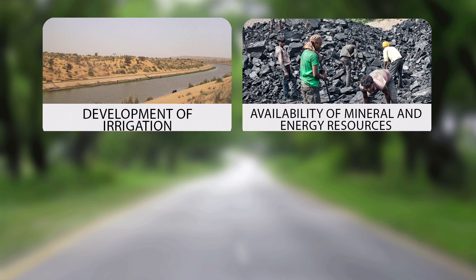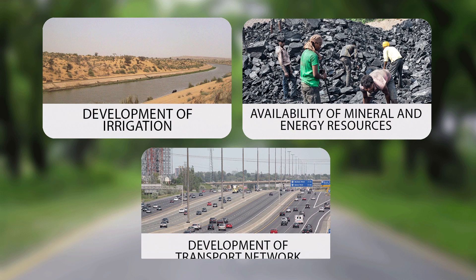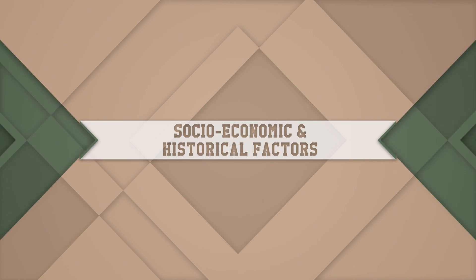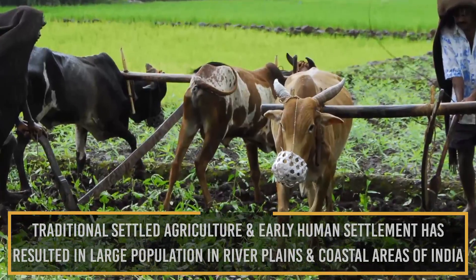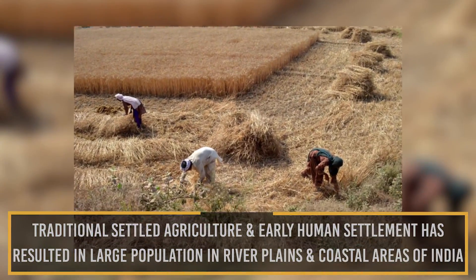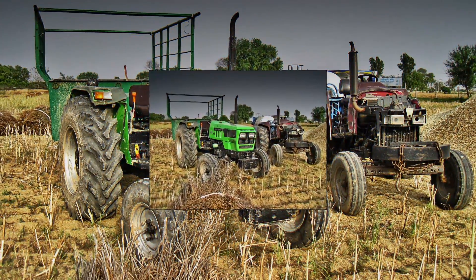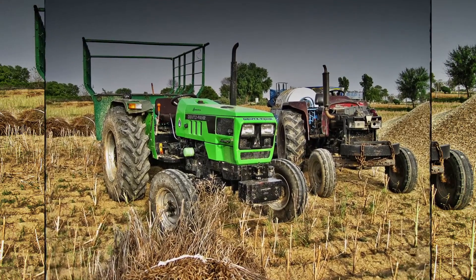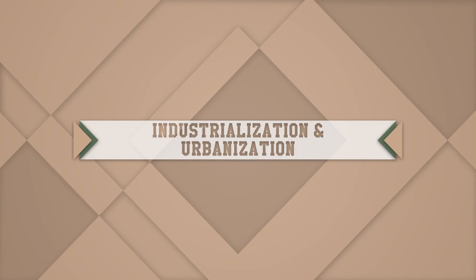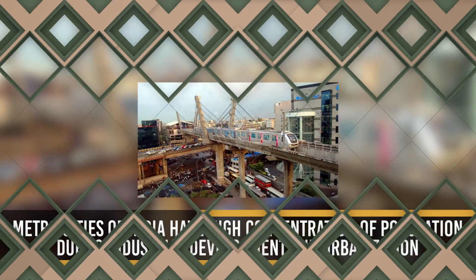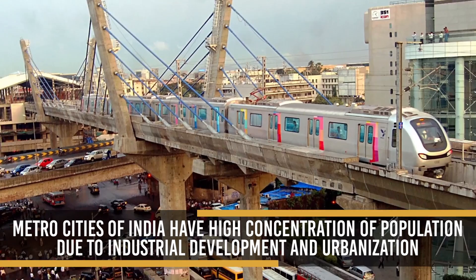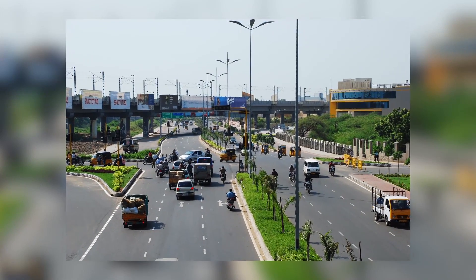Development of irrigation, availability of mineral and energy resources, and development of transport networks have resulted in moderate to high population. Socio-economic and historical factors such as traditional settled agriculture and early human settlement have resulted in large populations in river plains and coastal areas. Industrialization and urbanization in metro cities have led to high concentration of population, with large numbers of rural-urban migrants coming to these towns.